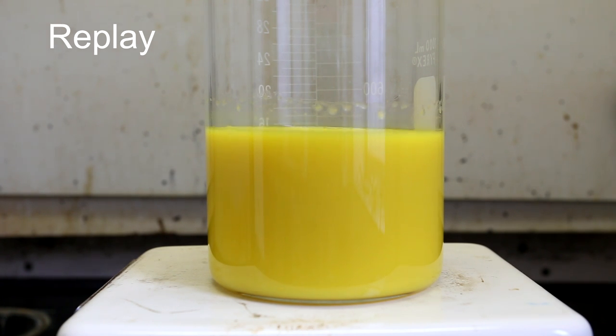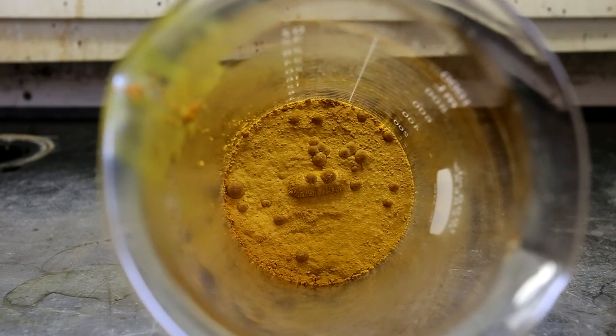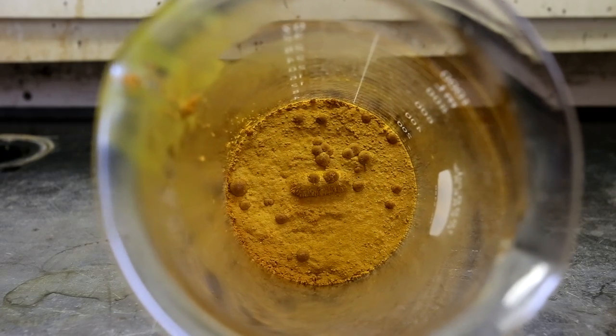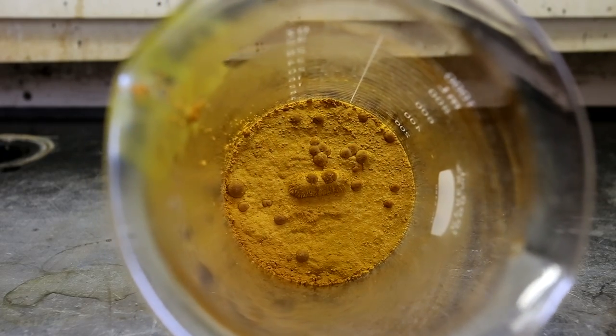At this point, you can turn off the stirring and let the precipitate settle to the bottom. The liquid portion was poured into an appropriate waste container, and at the bottom we were left with a cool-looking precipitate.